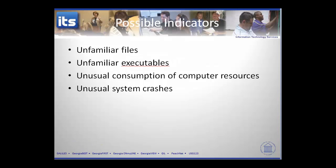Possible indicators include unfamiliar files on your computer, unfamiliar executables, unusual consumption of computer resources, or unusual system crashes. These are just possible — it could or could not be an attack underway. It goes back to whether you can tell the difference between normal behavior and abnormal behavior. Your action at this point is to pay a little bit more attention to see if any probable or definite indicators fire.